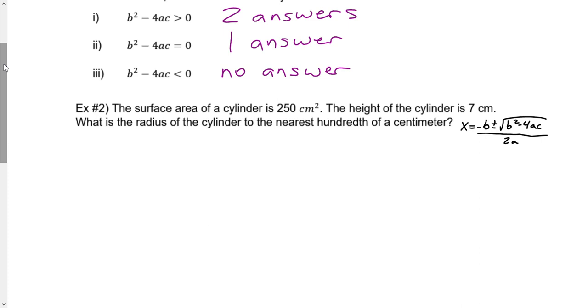The surface area of a cylinder is 250 centimeters squared. The height of the cylinder is 7 centimeters. What is the radius of the cylinder to the nearest hundredth of a centimeter?